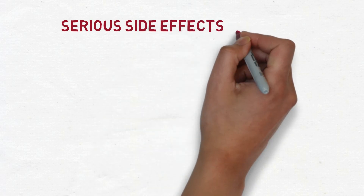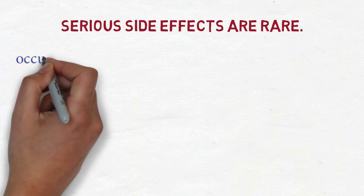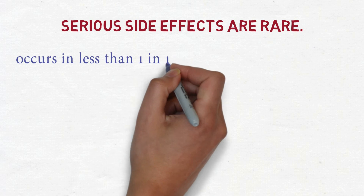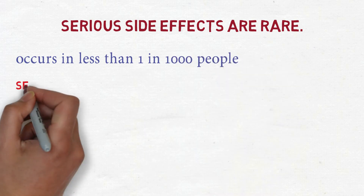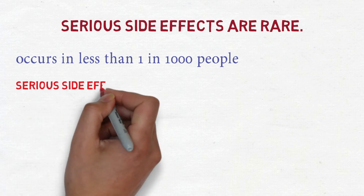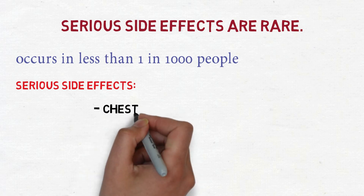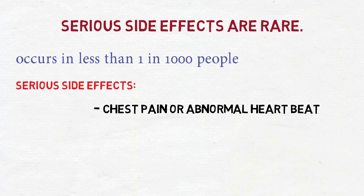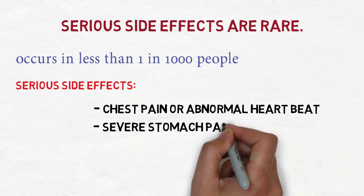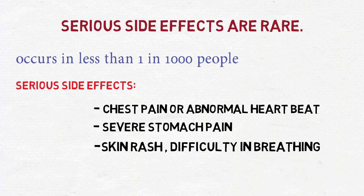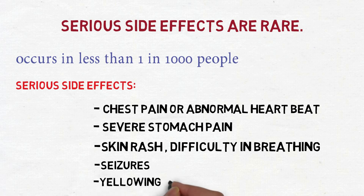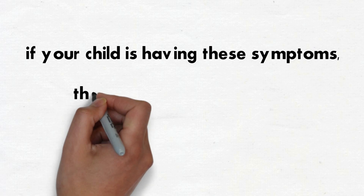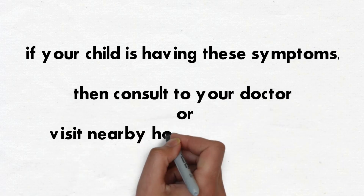Serious side effects are rare, occurring in less than 1 in 1000 people. These include chest pain or abnormal heartbeat, severe stomach pain, skin rash, difficulty in breathing, skin blisters, and yellowing of the skin or eyes. If your child has any of these symptoms, consult your doctor or visit a nearby hospital immediately.